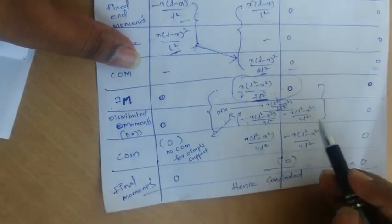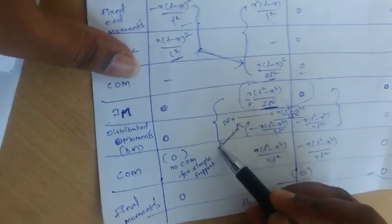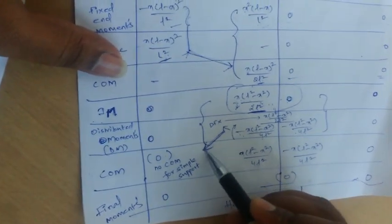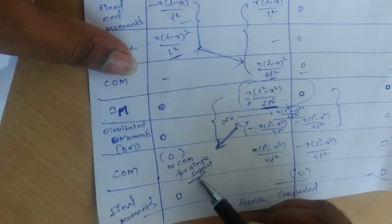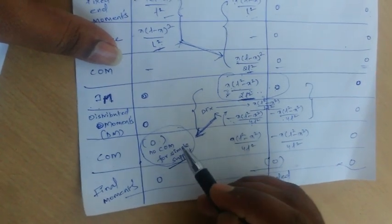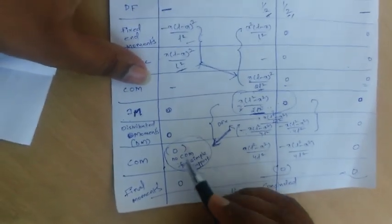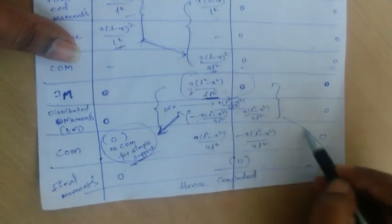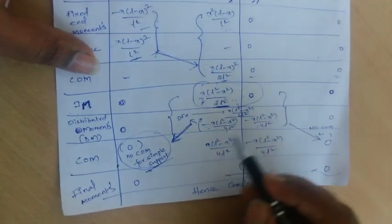After distributing, we carry over the distributed moments. However, carry-over must not be done to a simple support, as this would again create a non-zero moment there. Therefore, no carry-over moment is applied to either extreme simple support A or C.